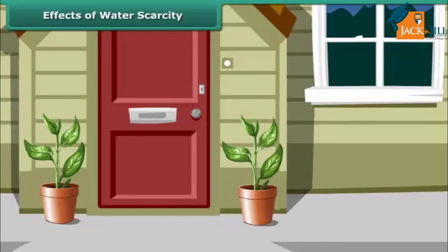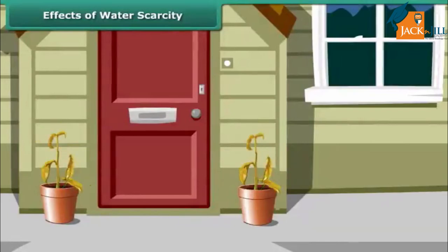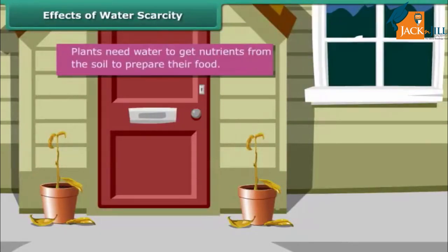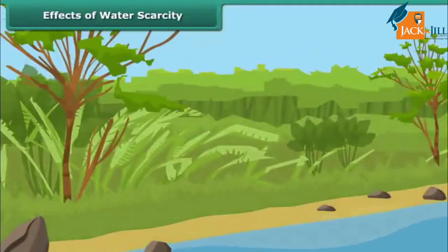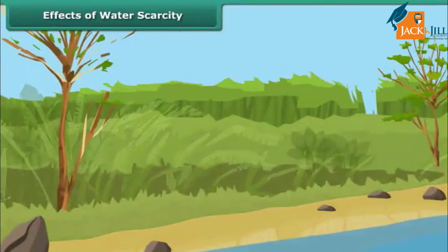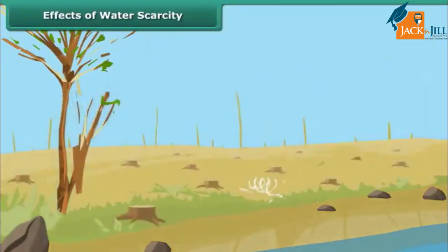Let us study the effect of water scarcity on plants. You are out on a holiday; when you return home after a week, you see that your plants have wilted. They did not get water for a week. Plants need water to get nutrients from the soil and to prepare their food. Non-availability of water causes them to wilt and ultimately die. Thus, scarcity of water will wipe out the green carpet from the earth's surface, resulting in less rainfall and reduced oxygen supply. Loss of plants and trees also means loss of food. Prolonged scarcity of water will make survival of every life form impossible on earth.